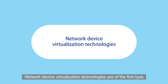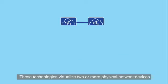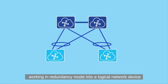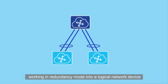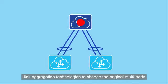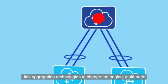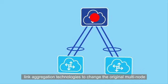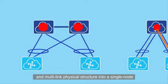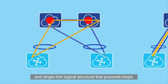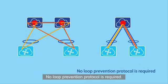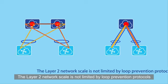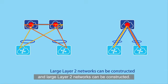Network device virtualisation technologies are the first type. These technologies virtualise two or more physical network devices working in redundancy mode into a logical network device that only functions as one node on the entire network. Network device virtualisation technologies work with link aggregation technologies to change the original multi-node and multi-link physical structure into a single-node and single-link logical structure that prevents loops. No loop prevention protocol is required. The layer 2 network scale is not limited by loop prevention protocols and large layer 2 networks can be constructed.